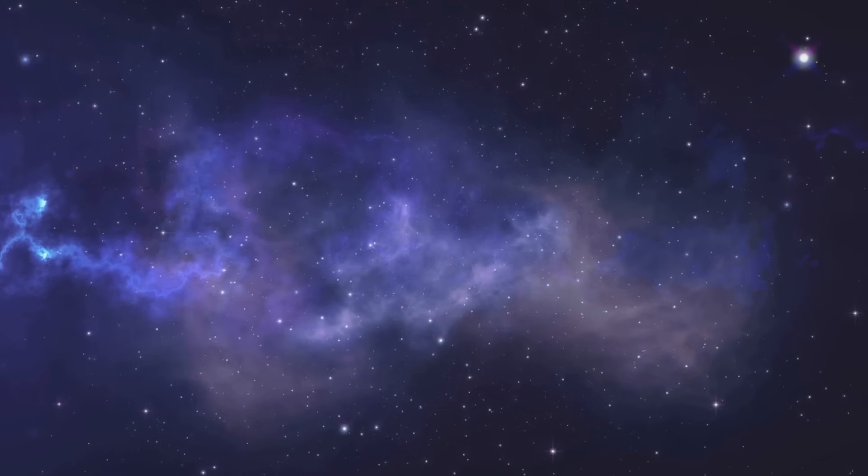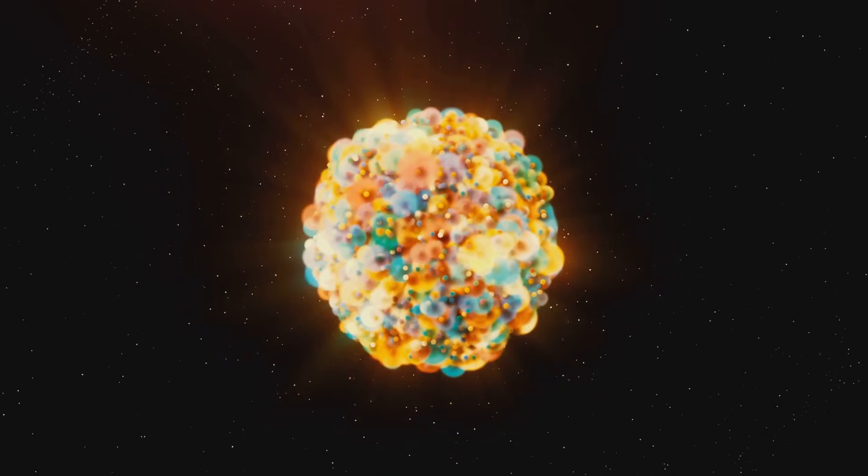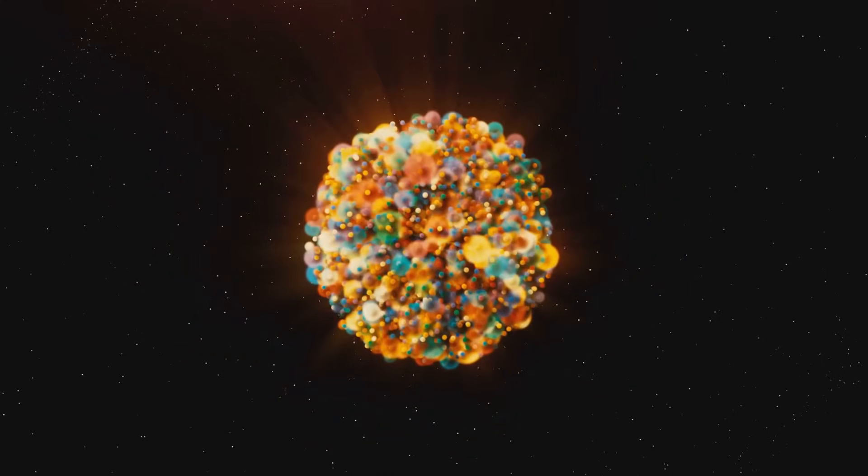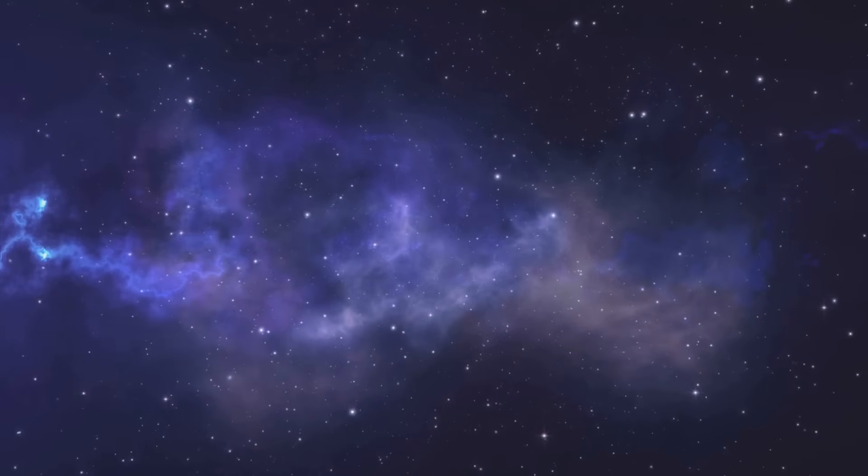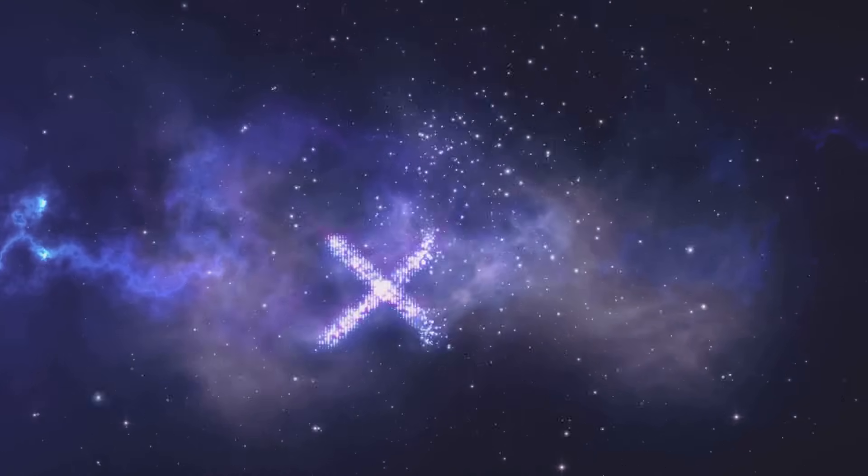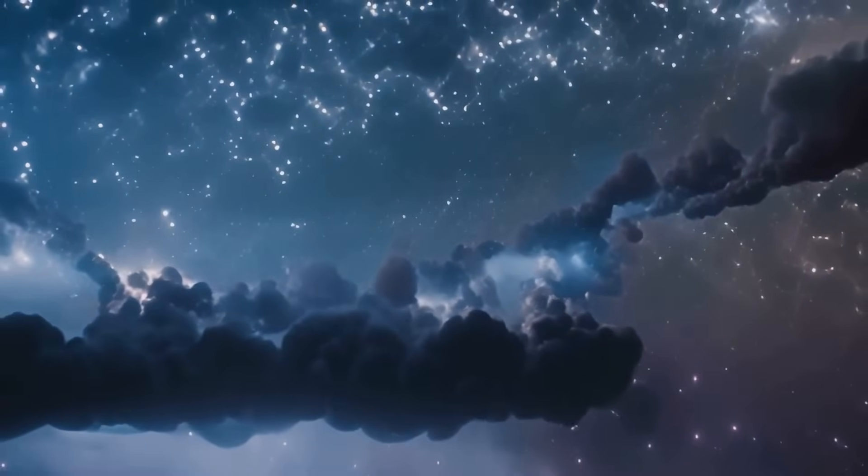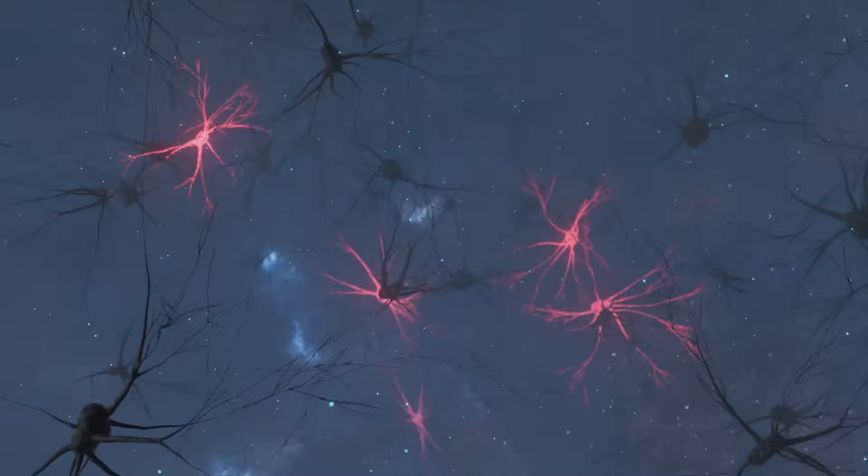Some scientists point to the way the universe has evolved. It started with the Big Bang, a chaotic explosion of energy. Over billions of years, the universe has become more complex—it forms stars, planets, and eventually life. This process looks a lot like the way a brain develops, starting simple and becoming more intricate over time.